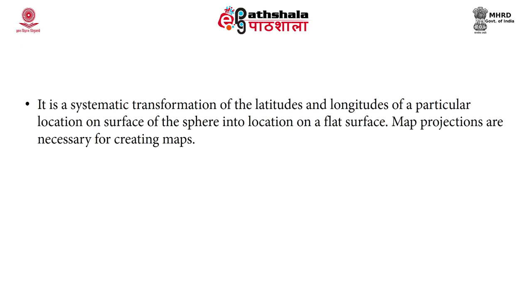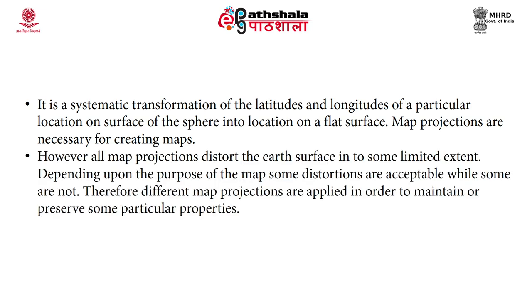Map projection is a systematic transformation of the latitude and longitude of a location on the sphere into a location on a flat surface. Map projections are necessary for creating maps; however, all map projections distort the Earth's surface to some limited extent. Depending upon the purpose of the map, some distortions are acceptable while others are not. Therefore, different map projections are applied in order to preserve certain particular properties, as illustrated in the diagram showing geographic coordinates projected onto a flat 2D surface.